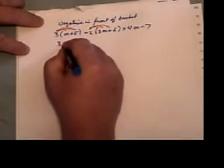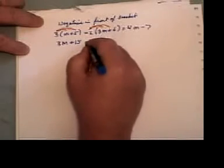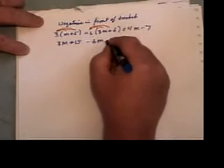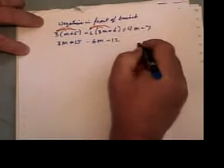So that'll give me 3 meatheads and 15 here. Negative 2 times 3 is negative 6m, or negative 6 meatheads, and negative 12, or subtract 12.